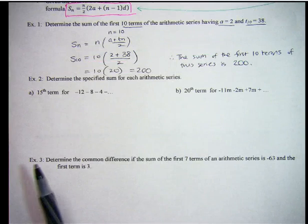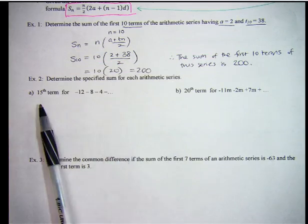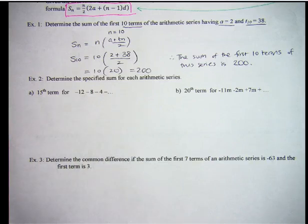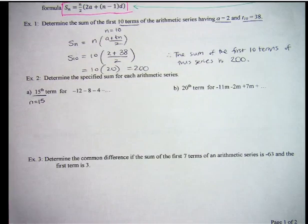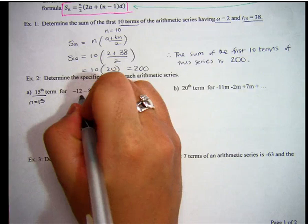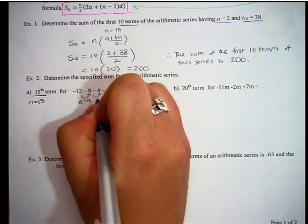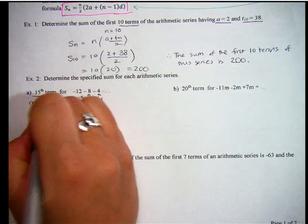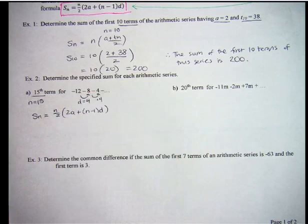For example 2, determine the specified sum for each of these arithmetic series. So the 15th term for negative 12, minus 8, minus 4, etc. So we know that N equals 15. We don't know what the 15th term of this series is, but we do know that the common difference is 4, that we just have to keep adding 4 to get to the next term. So I'm going to use the second version of the arithmetic series formula.